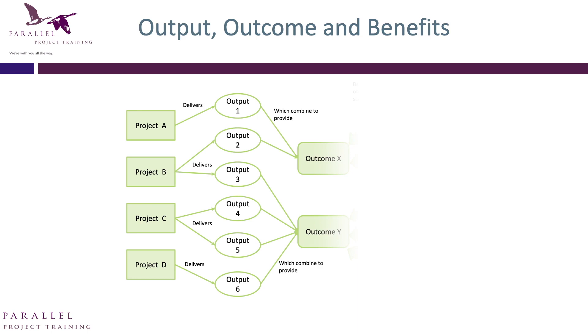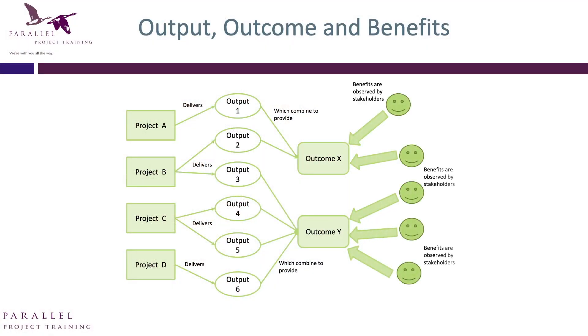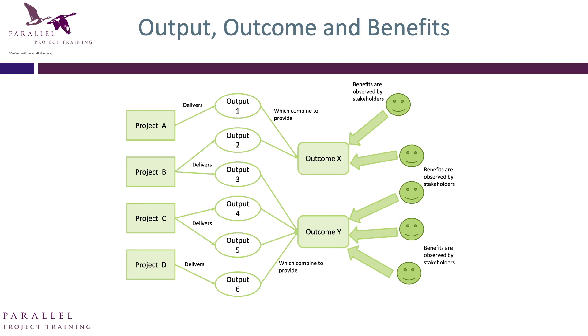The output enables us to achieve a new capability — a new thing we can do. So as a result of creating a new school, we can educate our children better, which means grades will increase. That is an outcome — the change in society we see as a result of putting that output to use. The benefits are what flow to the different stakeholders: pupils get one benefit, local employers get another.